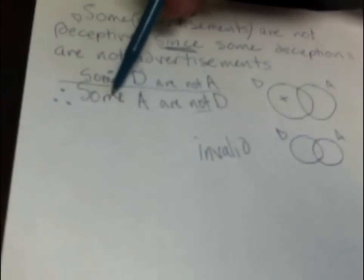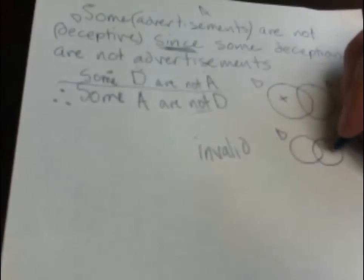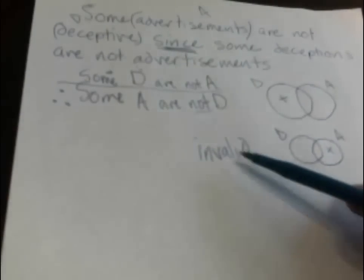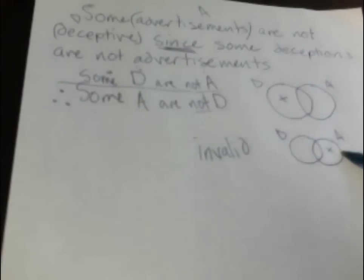This says there is something inside A but outside D, that's an X right here. So we've confirmed that our argument is invalid, because the conclusion diagram is not contained on the premise diagram.